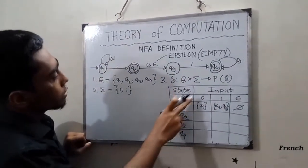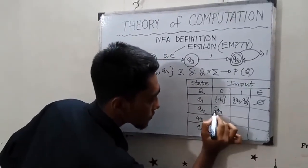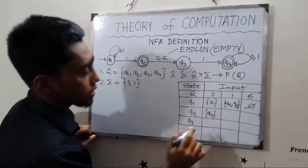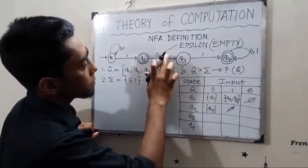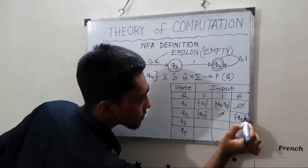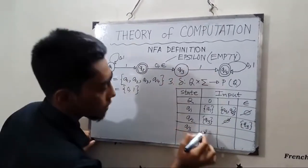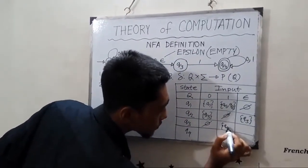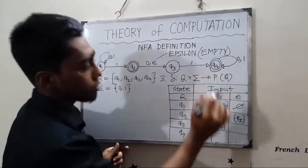From Q2 reading 0, we go to Q3. From Q2 reading 1, there is nowhere to go — empty set. From Q2 reading epsilon, we go to Q3. From Q3 reading 0, there is nowhere to go — empty set. From Q3 reading 1, we go to Q4. Epsilon from Q3 also leads nowhere — empty set.